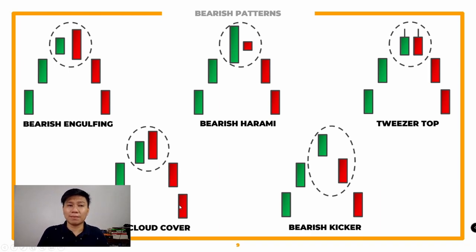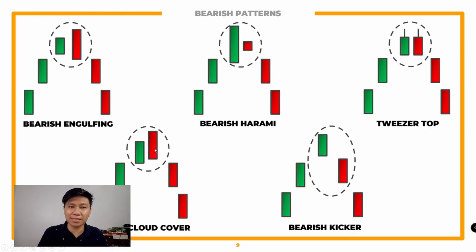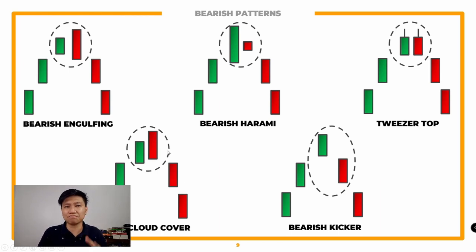We also have yung dark cloud cover — kabalik na rin lang siya ng piercing line. Ang characteristic nito is at least 50% — yung candlestick of the day kinain yung previous day, so at least more than 50% is nasa baba na. It signifies na humina na rin yung buying power, humina na rin yung uptrend. It should go down na rin depende pa doon sa following day — parang short downtrend lang din yung sinisignify nito. You still need to verify kung paano mo siya ititrade the following day.